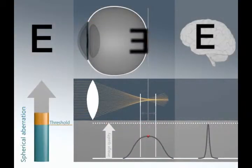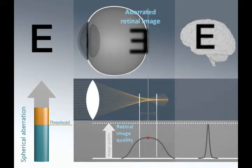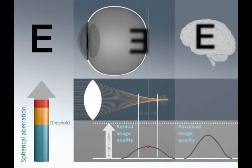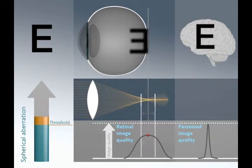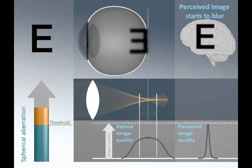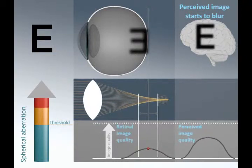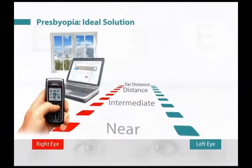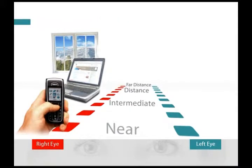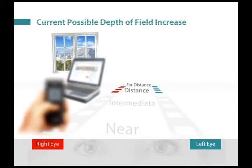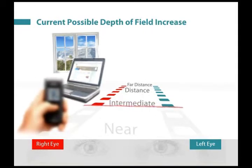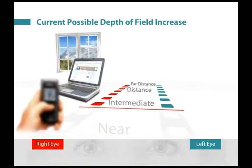As spherical aberration is increased further, this continues to degrade the retinal image, and one reaches a threshold beyond which the visual cortex is no longer able to completely process the degraded image, meaning that the perceived image starts to blur, although the perceived image is still significantly less blurred than the retinal image. Our work taught us that it is possible to increase the depth of field by the equivalent of about one and a half diopters before reaching this threshold.